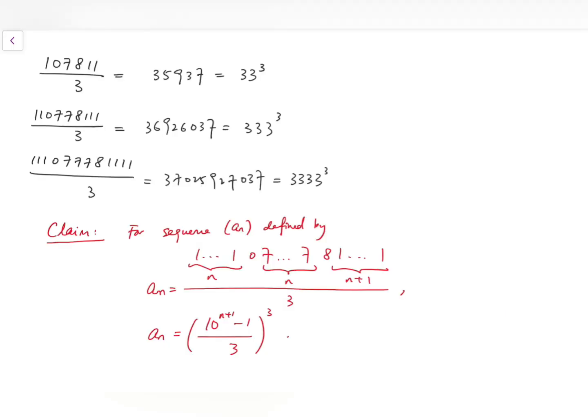This is a simple yet interesting number patterns problem. So if you try to really compute the fractions, they are all really integers, say 35937, 369026037, and so on, and if you try to test its divisibility, say when there's a multiple of 3, or some other prime factors, etc.